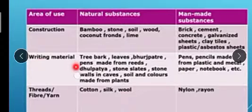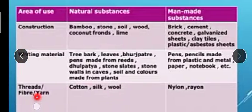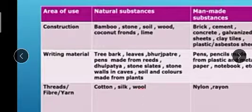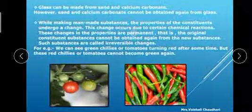Writing materials - tree bark, leaves, rubber, paints made from reeds, palm leaves, stone slates, stone walls, soil, and colors made from plants. Man-made substances are pens made from plastic and metal, paper notebooks, etc. Area of use: fibers or yarn. Natural substances are cotton, silk, and wool. Man-made substances: nylon and rayon.